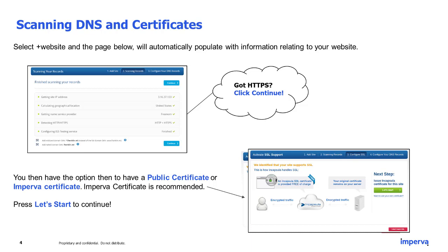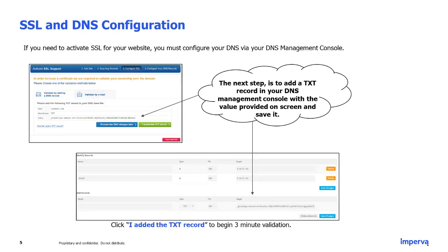You can now press 'Let's Start' to continue. Before we can activate SSL by provisioning the Imperva-generated certificate, the owner of the domain must verify ownership by configuring a TXT record in your DNS management console. You must add the TXT record with the value provided on screen and save it.